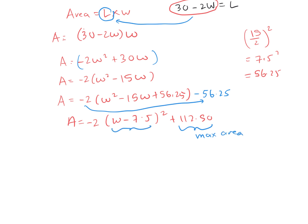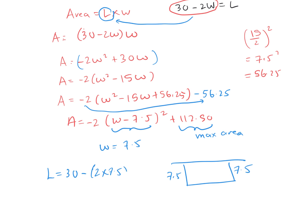The maximum area of 112.50 happens when the width is 7.5. Going back to the diagram: width is 7.5 and we had 30 meters of fencing, so the length is 30 minus 2 times 7.5, which gives us 15. As a rule of thumb: when maximizing a rectangle with only three sides, the length is generally double the width.